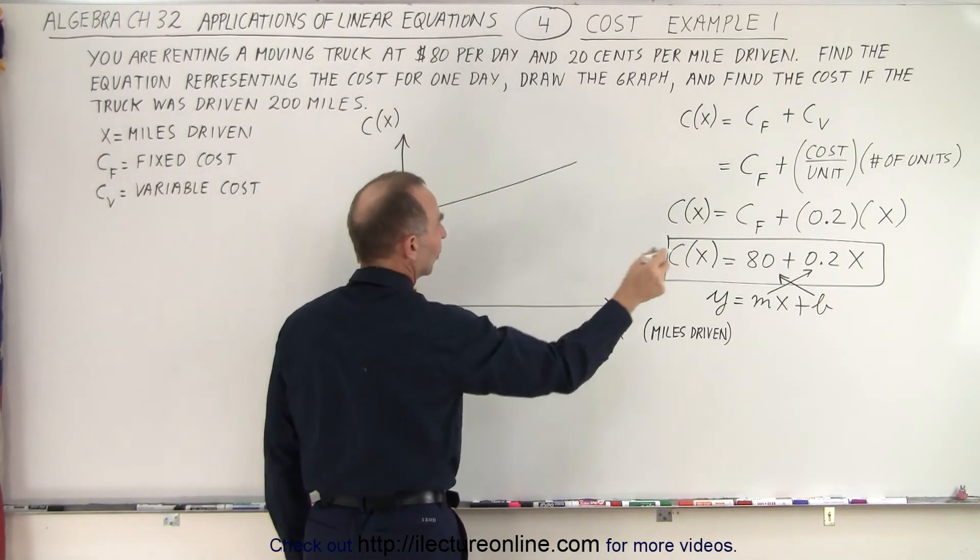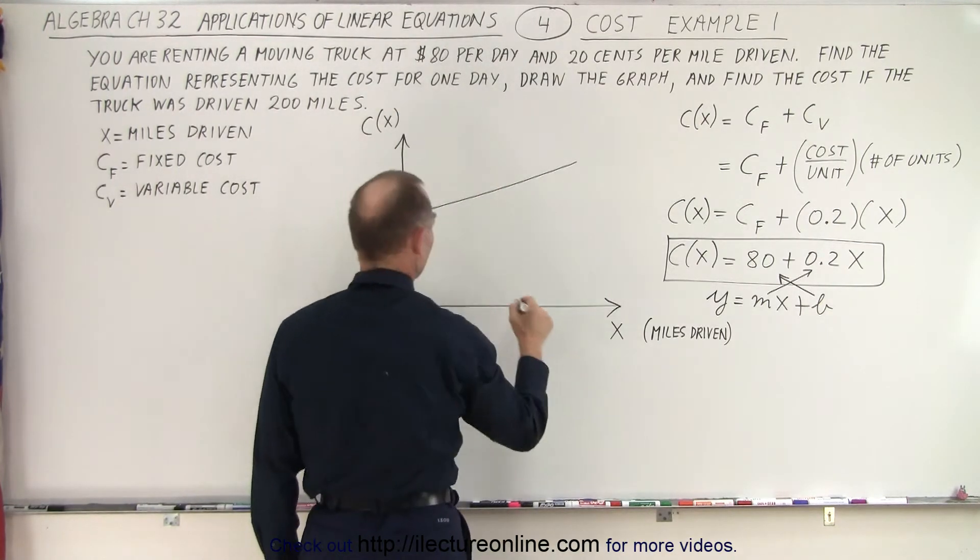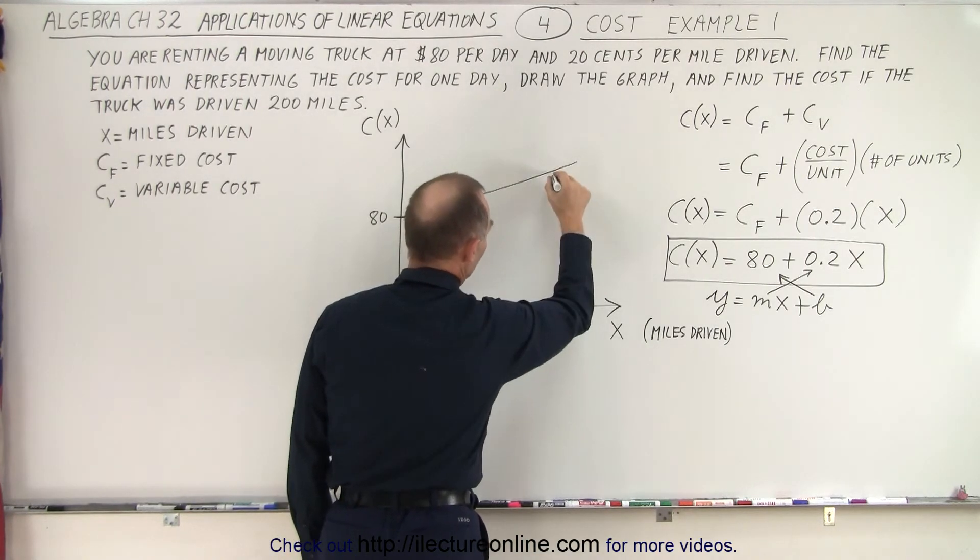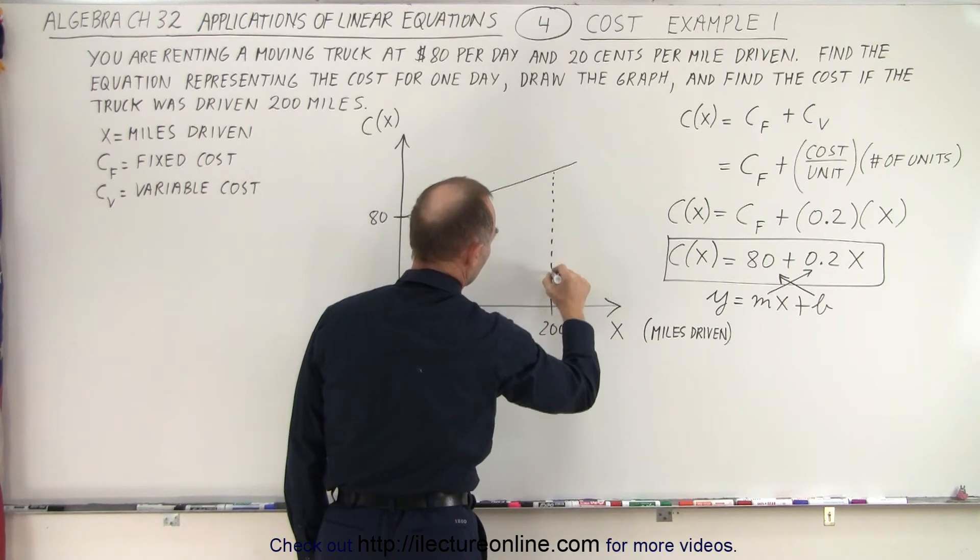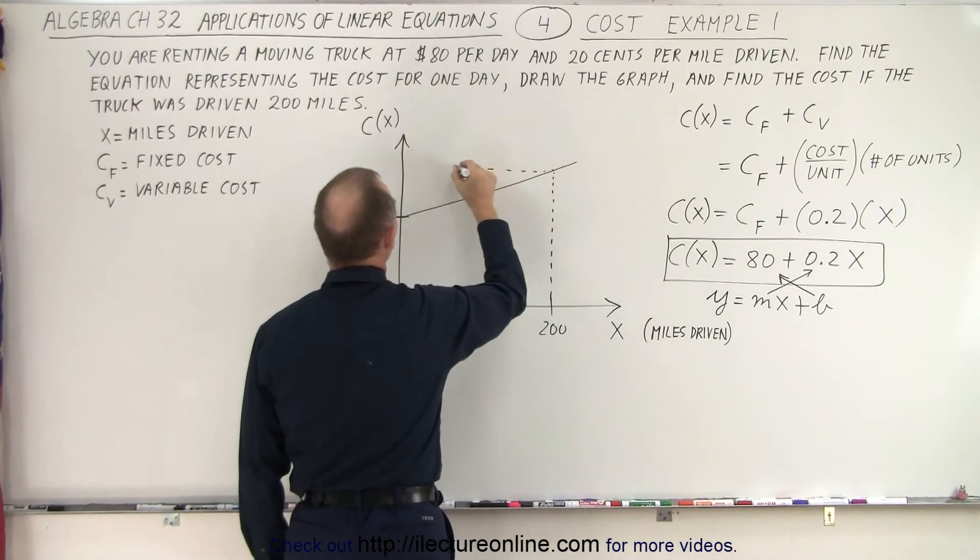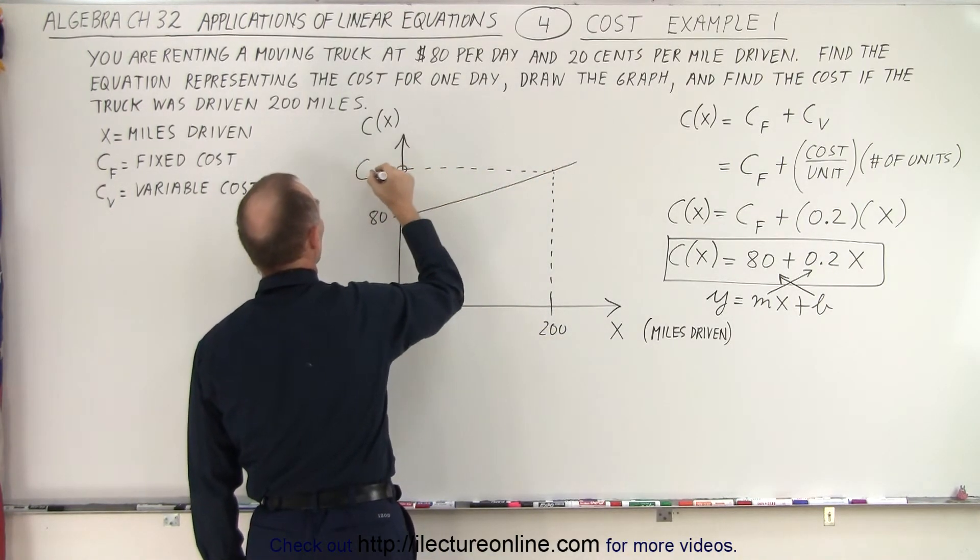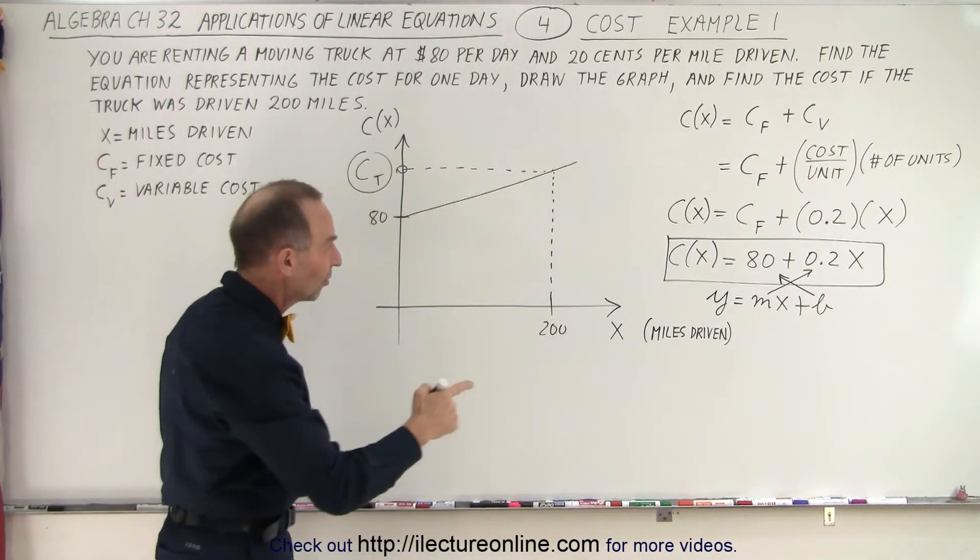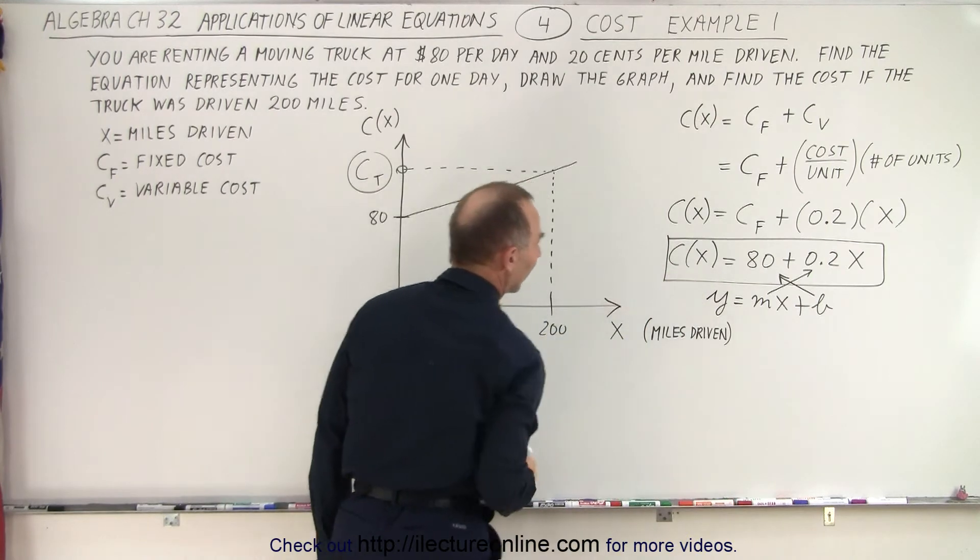So then you say, well, if I'm going to drive 200 miles, which is right there. So let's say that this here is 200 miles. We put a line straight this way and a line going this way. So whatever this is right here, that is the total cost. So we'll call C sub t the total cost, which is simply the cost as a function of x.